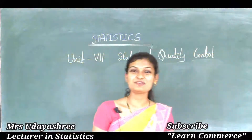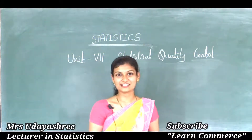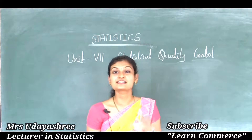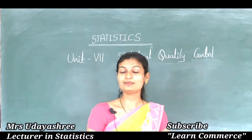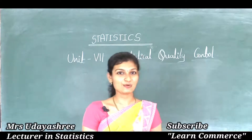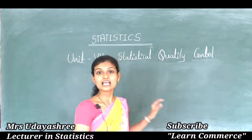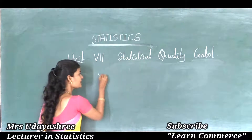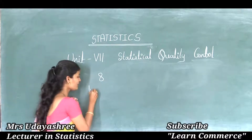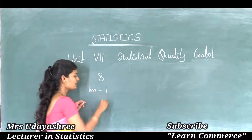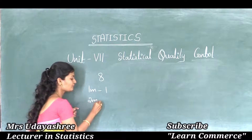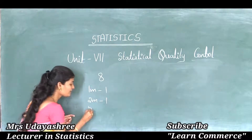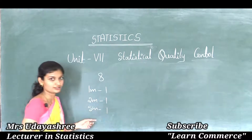Hello everyone, welcome to second PUC Statistics Online Classes. In this class we are going to discuss 7th Chapter, that is Statistical Quality Control. This chapter is important for 8 marks. We can expect 1 question for 1 mark, 1 question for 2 marks, and 1 question for 5 marks.